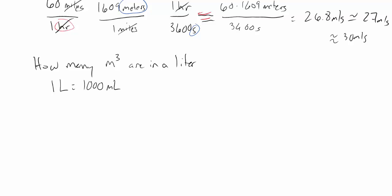But I do know that one liter is equal to 1,000 milliliters. That's the definition of what a milliliter is. And it turns out that a milliliter is the same as a centimeter cubed. So with that information, we should be able to convert from a liter into a cubic meter.